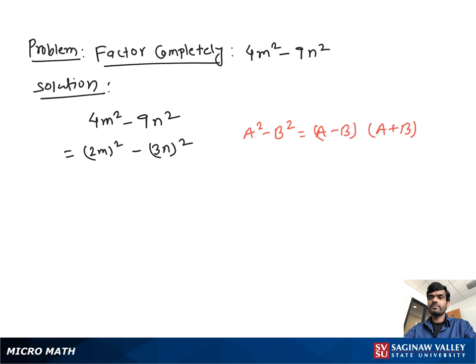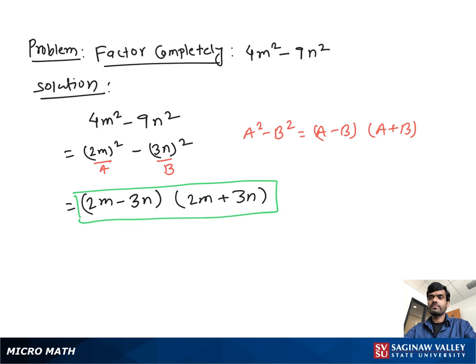If we suppose 2m as a and 3n as b, we can write this as 2m minus 3n times 2m plus 3n, and this is our final complete factored form.